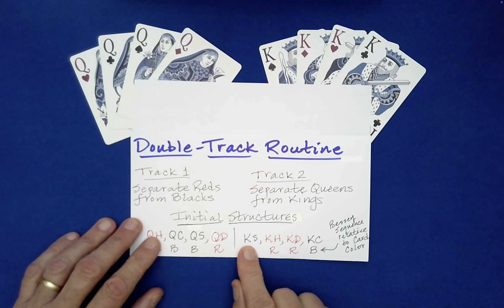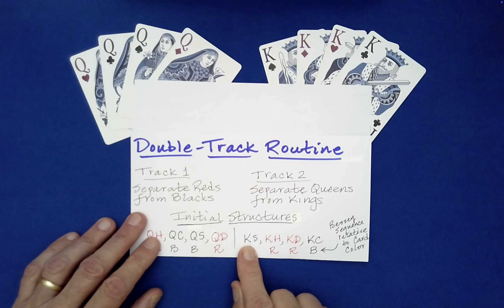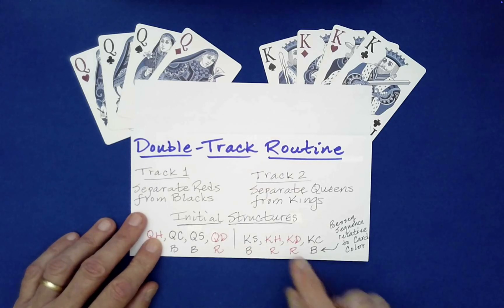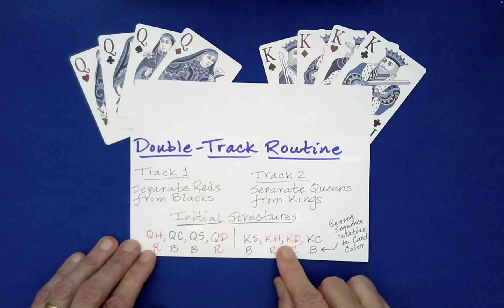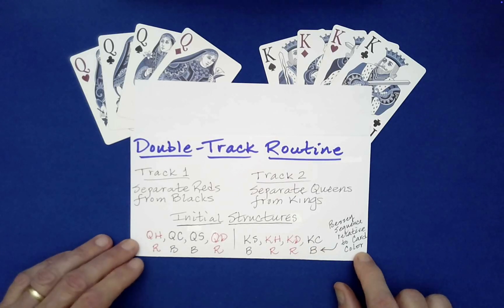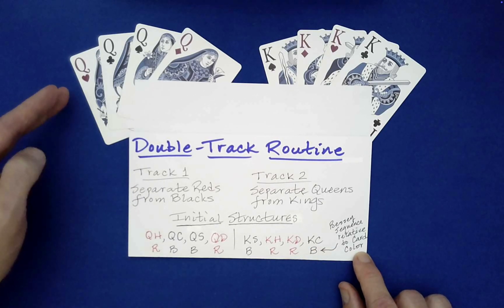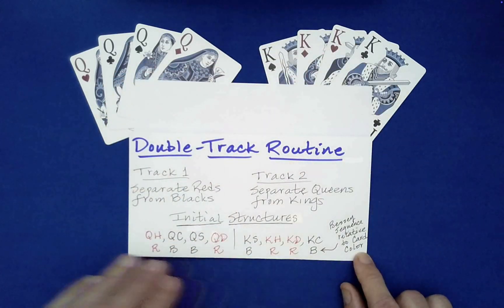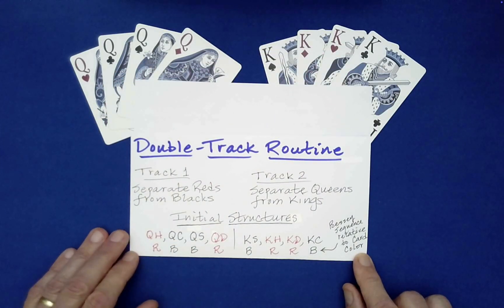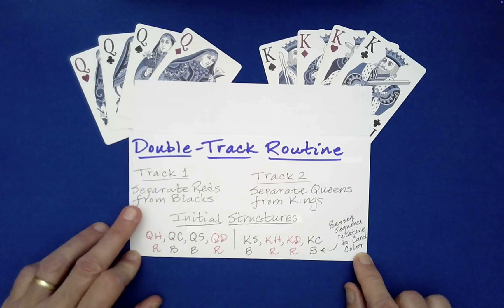For example, the spectator can ask to have the red cards separated from the black cards at the end, or the queens separated from the kings at the end. Now the veterans to my channel will recognize that relative to card color, if we randomly stack these two piles of four cards, we'll have a Bessie sequence of order eight relative to card color, and that will prove helpful for track one.